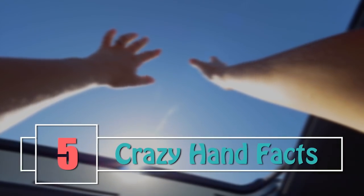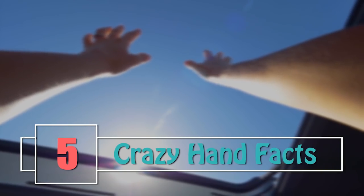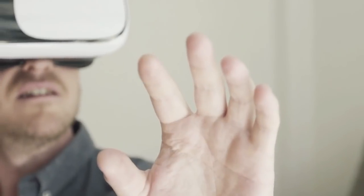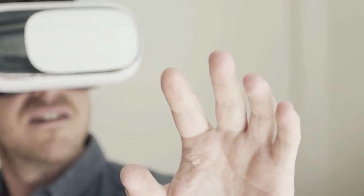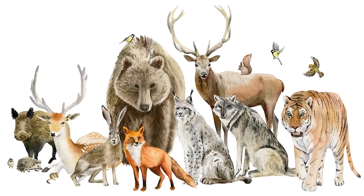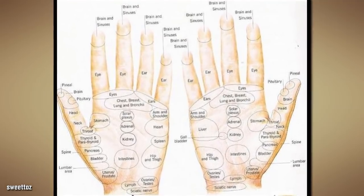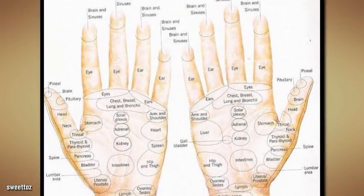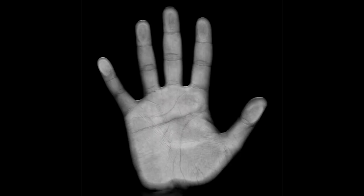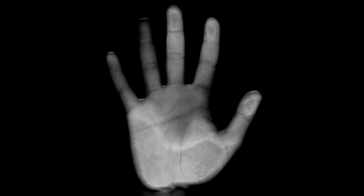Crazy Hand Facts. Your hands are very sensitive. It's why it hurts when you touch something sharp or something hot. Did you know that humans have the most sensitive hands of any other living animal on Earth? This is because your hands contain over 600 pain receptors per square inch. This equals to an awful lot of pain receptors.